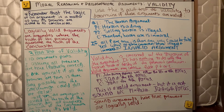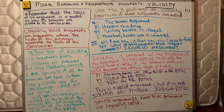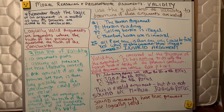Hi everyone, welcome back. The video today is going to focus on validity. We're talking about moral reasoning and philosophical arguments. In one of our previous videos we talked about the fact that moral reasoning is about offering and evaluating reasons that are meant to support moral conclusions. When we present arguments, we need to have arguments that avoid bad reasoning and false premises.